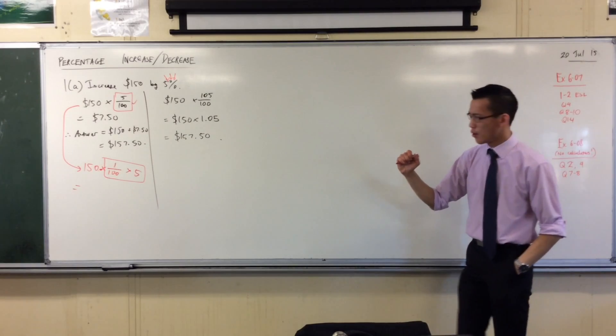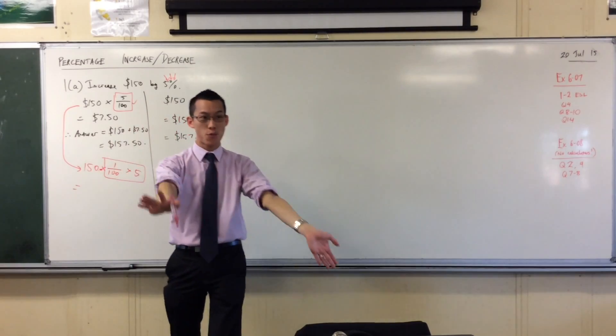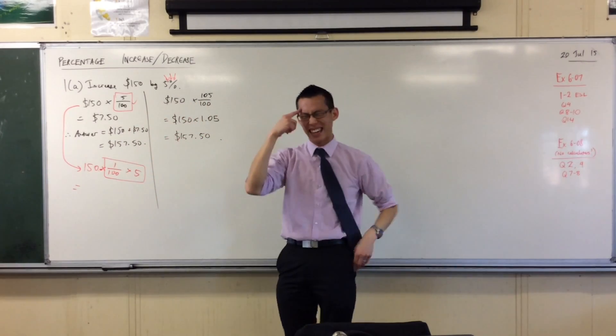Should I move it that way to the left? Or should I move it to the right this way? What do you think? When I divide by 100, should I move it to the left, right? It's to the left. Here's how I know why.